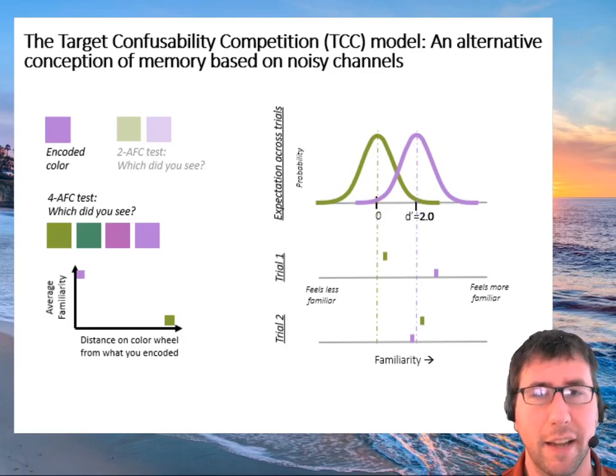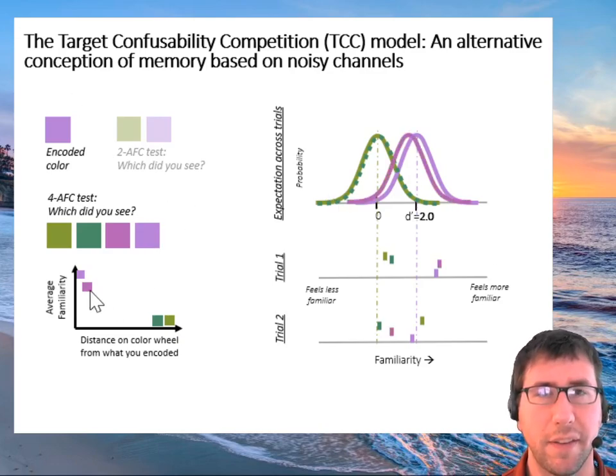So it must be the case that some colors nearby to purple also get familiarity boosts. And so that's the whole claim we're making: this dark green probably gets no familiarity boost, it's very distinct from the purple. But this dark purple color must get some boost in familiarity, maybe quite a lot, because it's very similar to the color you saw. And so on some trials that dark purple color will be likely to win because it also has a familiarity boost.